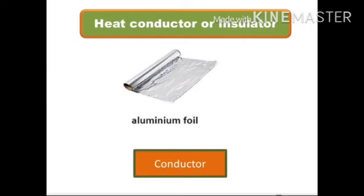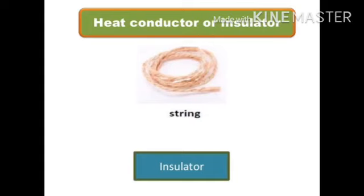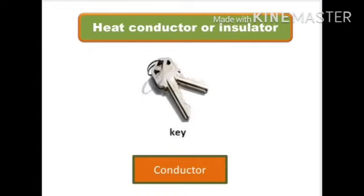Aluminum foil used in our kitchen — is it a heat conductor or insulator? It is a conductor because aluminum is a metal and metals allow heat to pass through them. Is string a heat conductor or insulator? String is an insulator as it is made of jute or synthetic fiber, so it cannot conduct heat. Is a key a heat conductor or insulator? It is a conductor because it is made of metal.